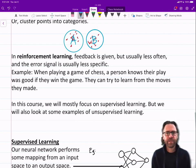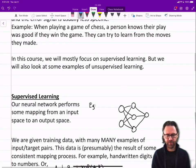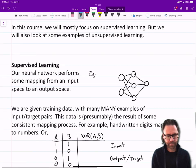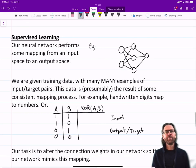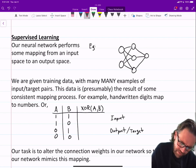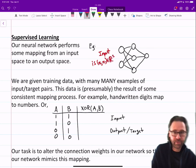In this course, we're mostly going to focus on supervised learning, but we'll also look at some examples of unsupervised learning. Supervised learning: our neural network performs some mapping from an input space to an output space. So I've got a picture of a neural network on the right here, and we have inputs over here.